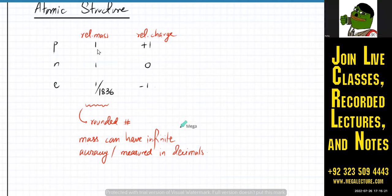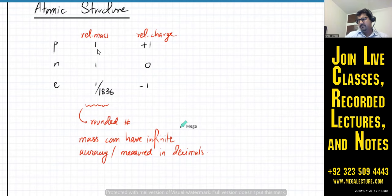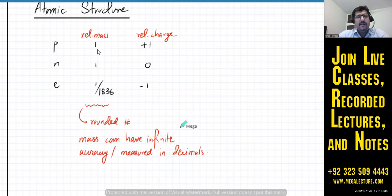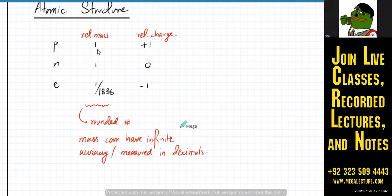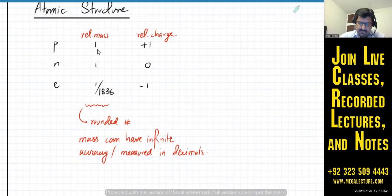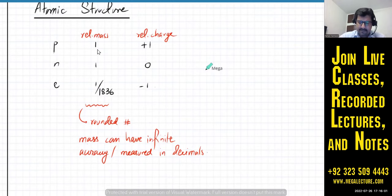A student asks whether the mass spectrometer topic has been removed from the syllabus. The teacher clarifies it is still in the syllabus but will be covered at the very end — it's a completely separate topic from moles. They also note that A2 content has recently been added, making it a much bigger topic now than it was previously.